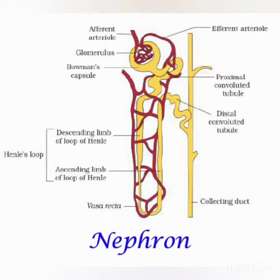Deoxygenated blood contains more carbon dioxide and less oxygen, but it still contains food particles, waste particles, and other things. Oxygenated blood has more oxygen and less carbon dioxide but also contains waste and food. The renal artery comes into the Bowman's capsule and breaks into a large number of fine blood vessels called capillaries. This network of capillaries is called the glomerulus. Bowman's capsule is the cup-shaped structure and inside it is the glomerulus.